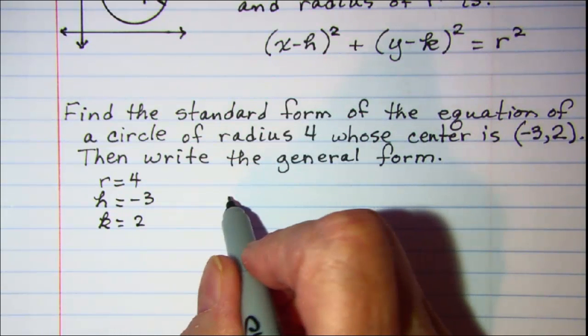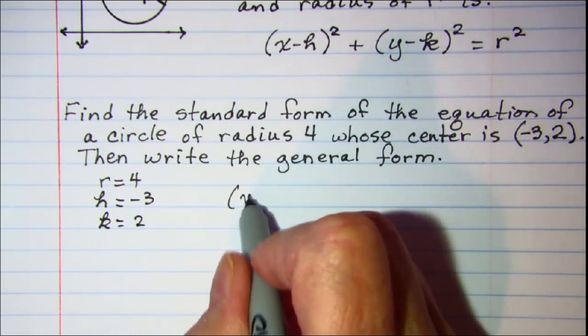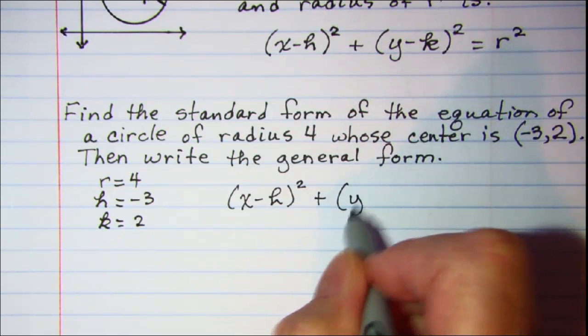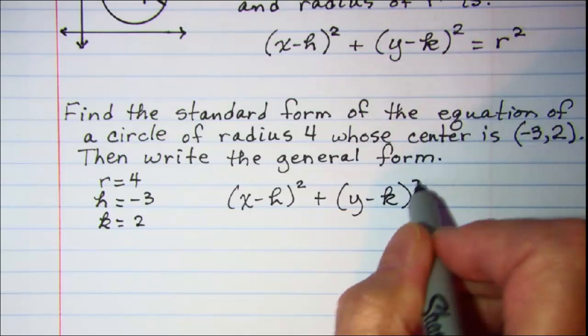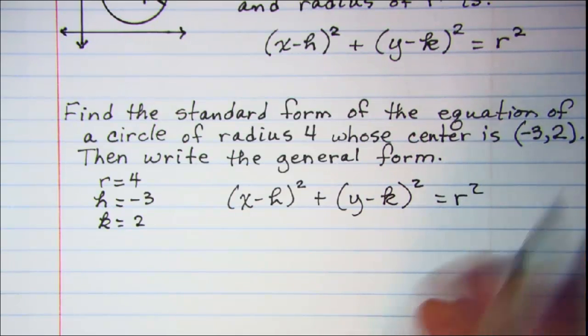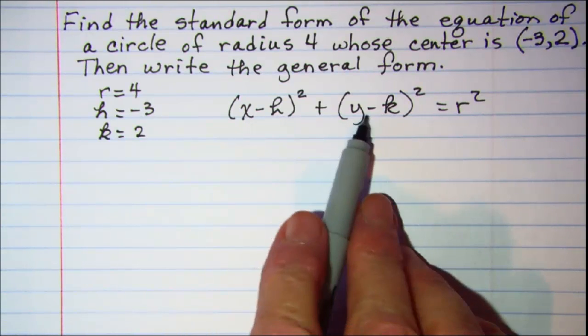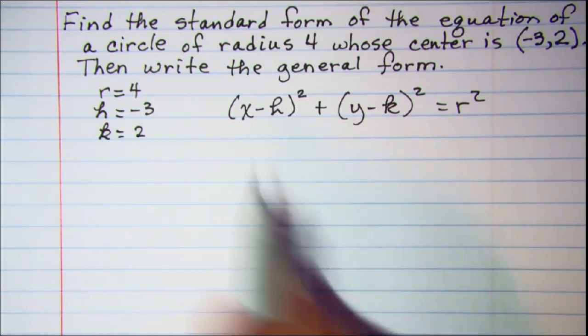Our standard form of the equation is (x - h)² + (y - k)² = r². And now we just need to substitute in our numbers. The x and the y are variables, so we'll leave those alone.